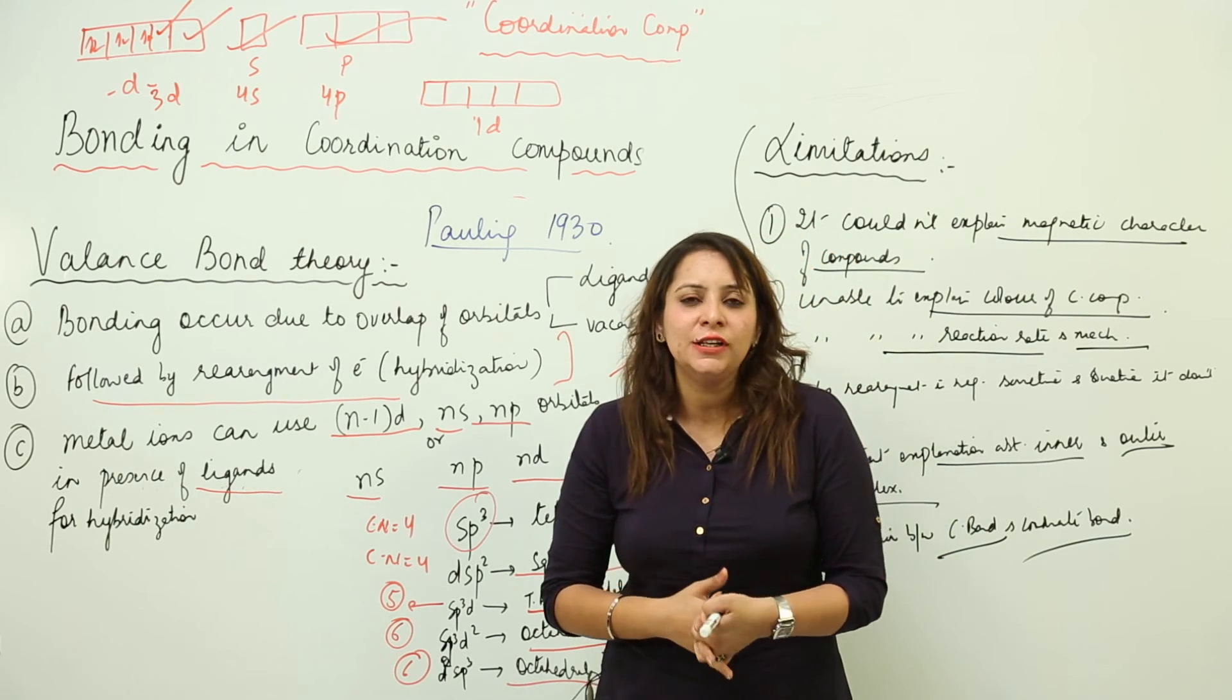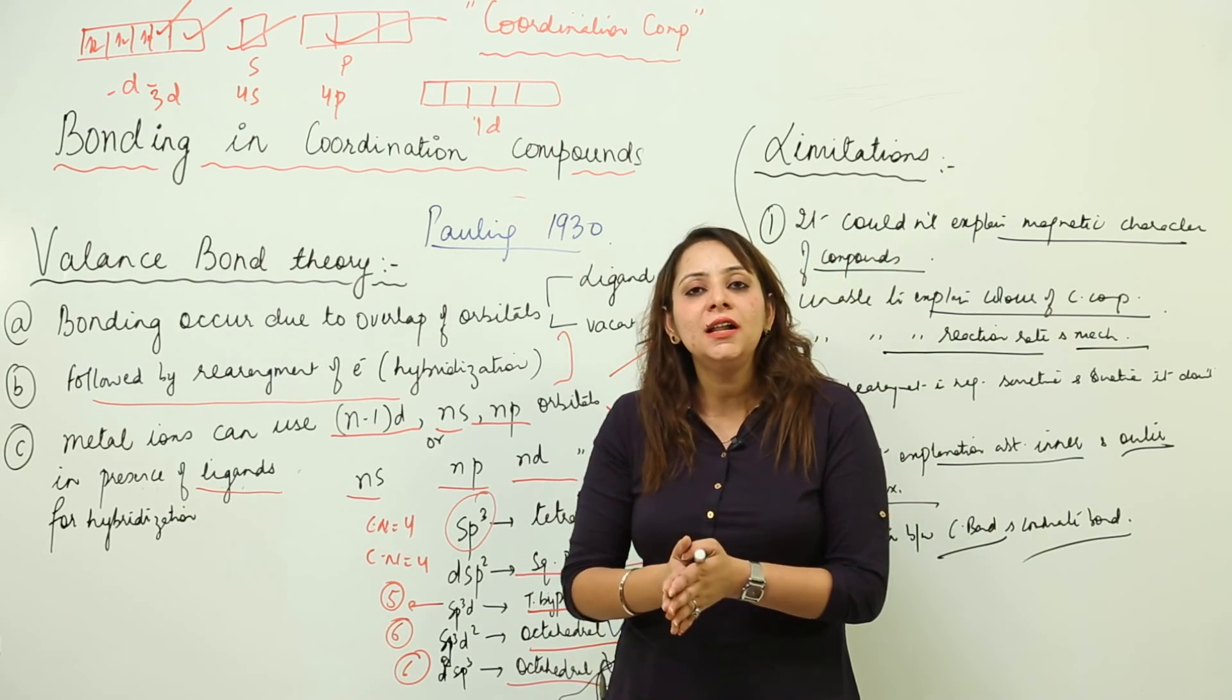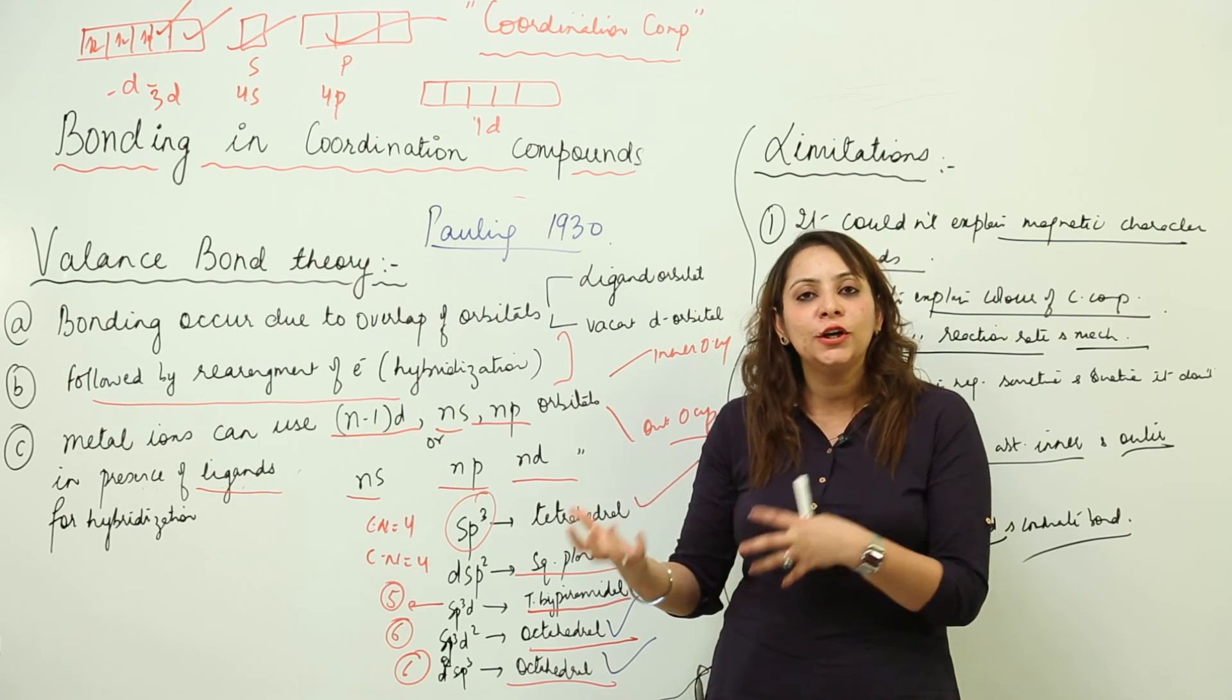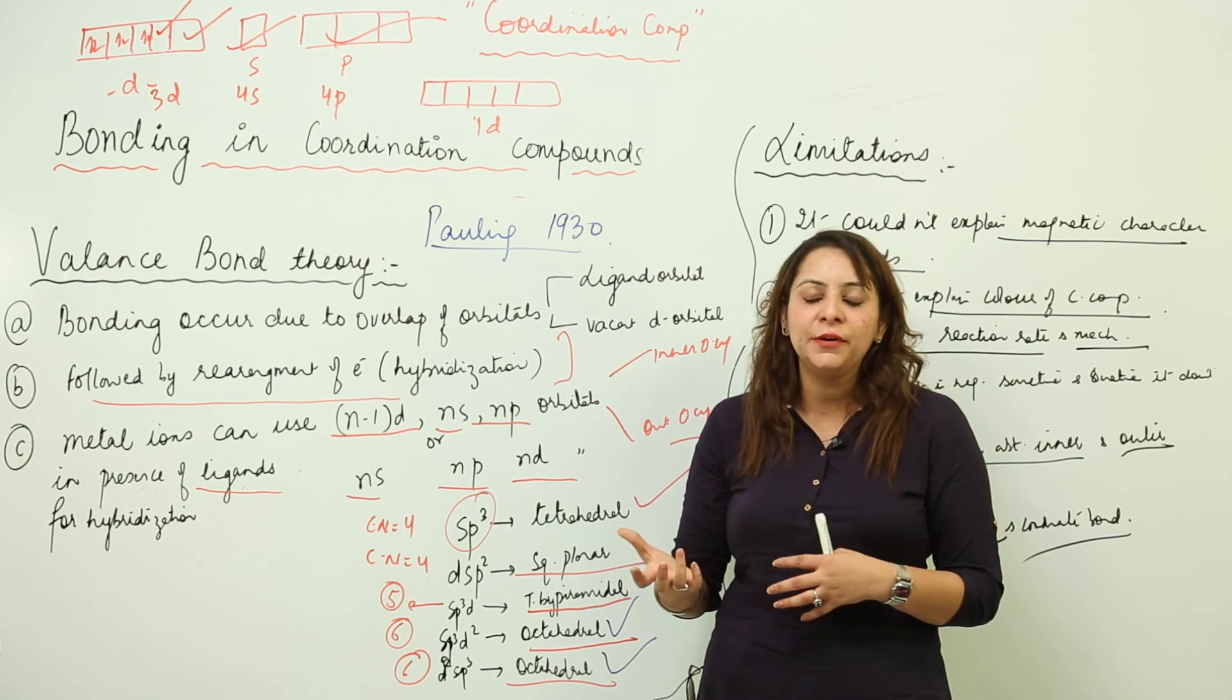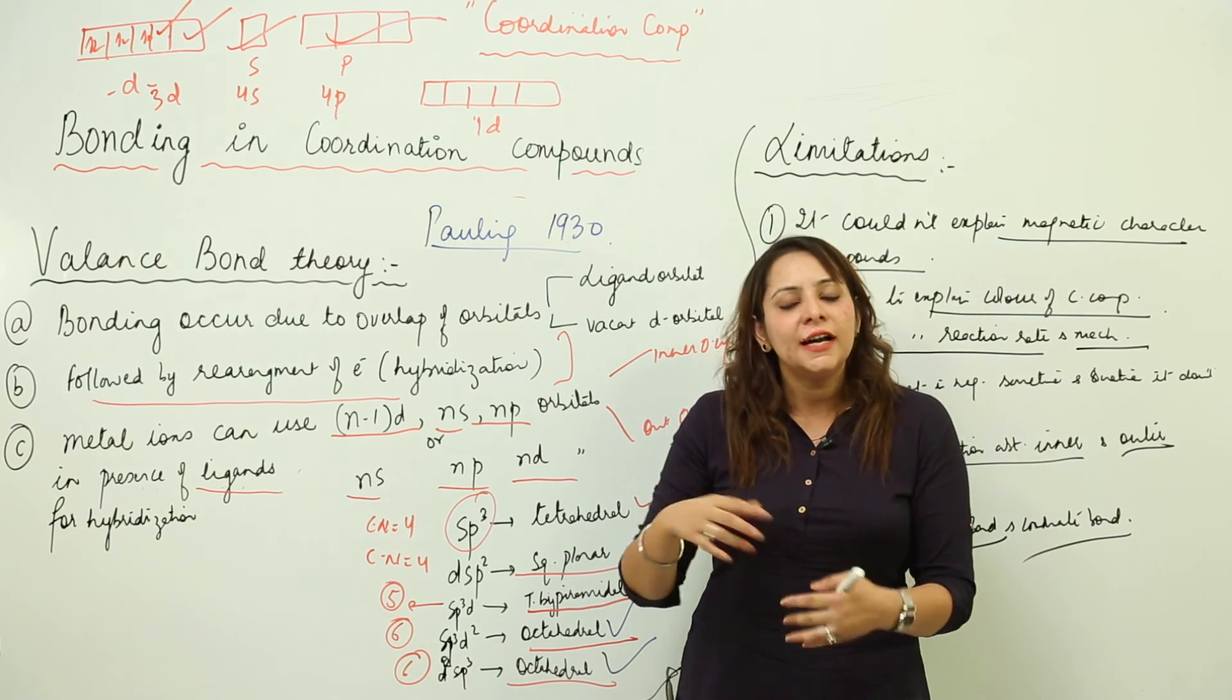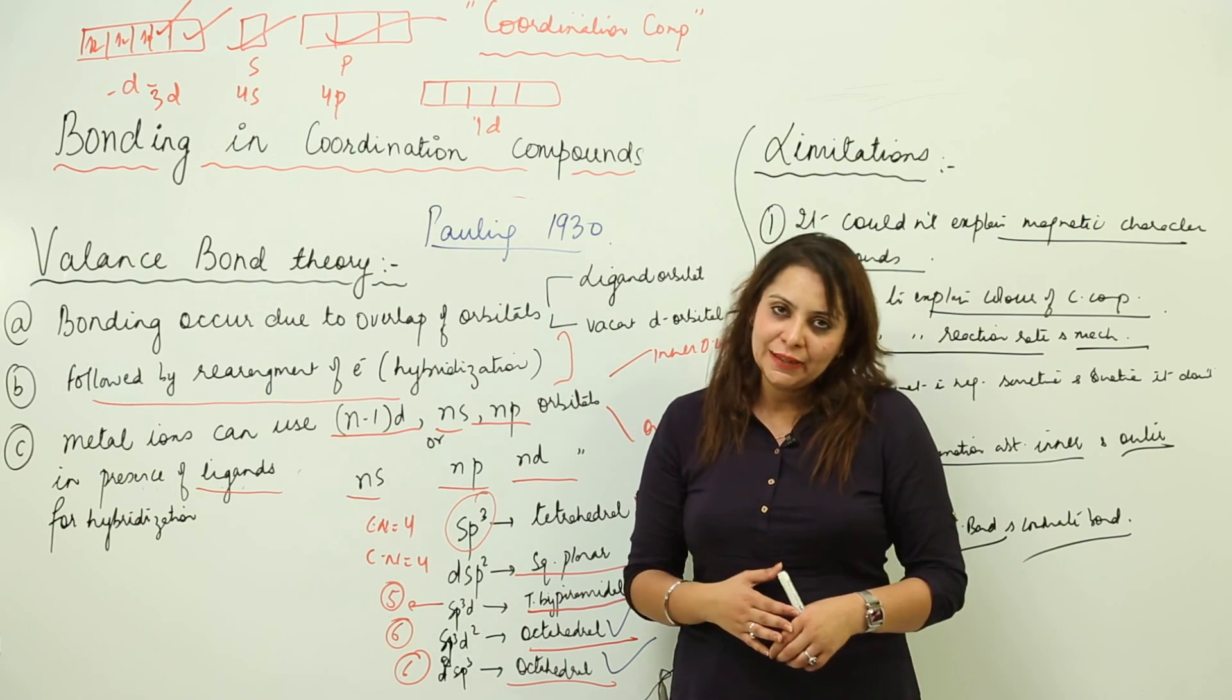These limitations just led to the failure of Valence Bond Theory and gave rise to Crystal Field Theory. But still, hats off to Pauling because he tried to explain many things. He made us familiar with the inner orbital and outer orbital complexes, the shapes, the secondary valences, and the primary valences. But because they possessed certain limitations, we need to look for a different theory—the modern theory, the most acceptable theory—that is Crystal Field Theory. So now we are going to start with that theory.